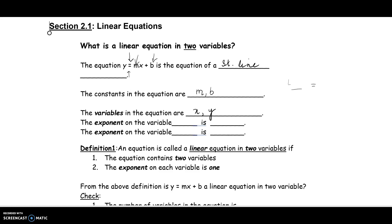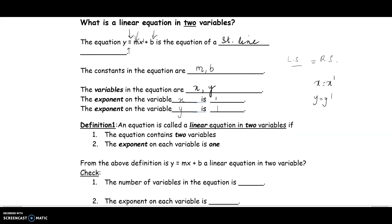If you see a left side equal to the right side, that's an equation. Now, the exponent on the variable x — x is the same as x to the 1, so the exponent is 1. Similarly, y is the same as y to the 1, so the exponent on y is also 1. This is called a linear equation in two variables. The word 'linear' comes from the fact that the exponent on x is 1 and the exponent on y is 1.